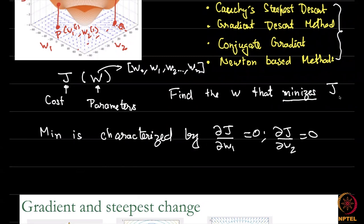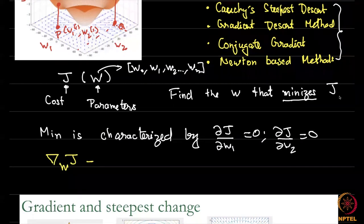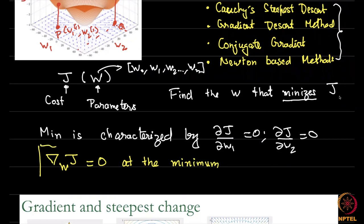The minimum also has certain implications on the second derivative, but those are more complex. For any optimum, you automatically know these two conditions should be true. Another way of writing it, based on our discussion of gradient, is to say: gradient of J with respect to w equals 0 at the minimum. This one condition is what we will try to satisfy.